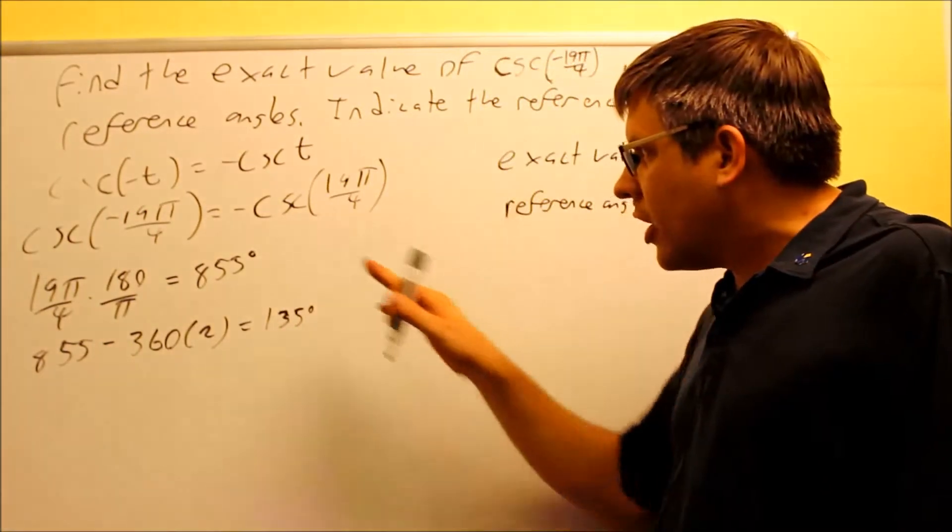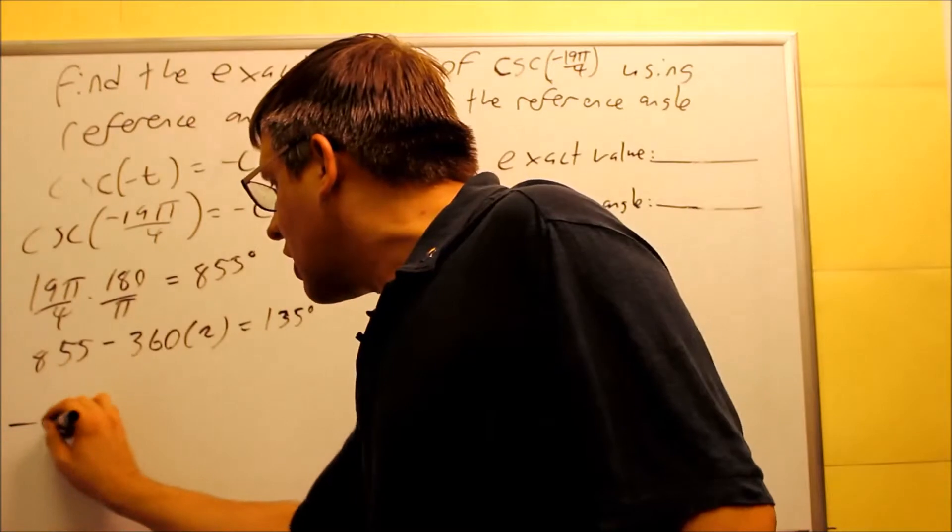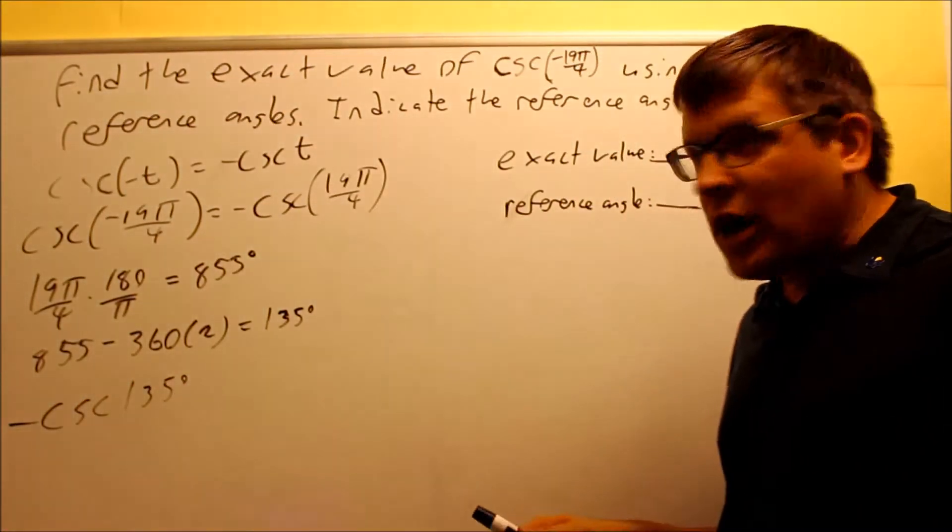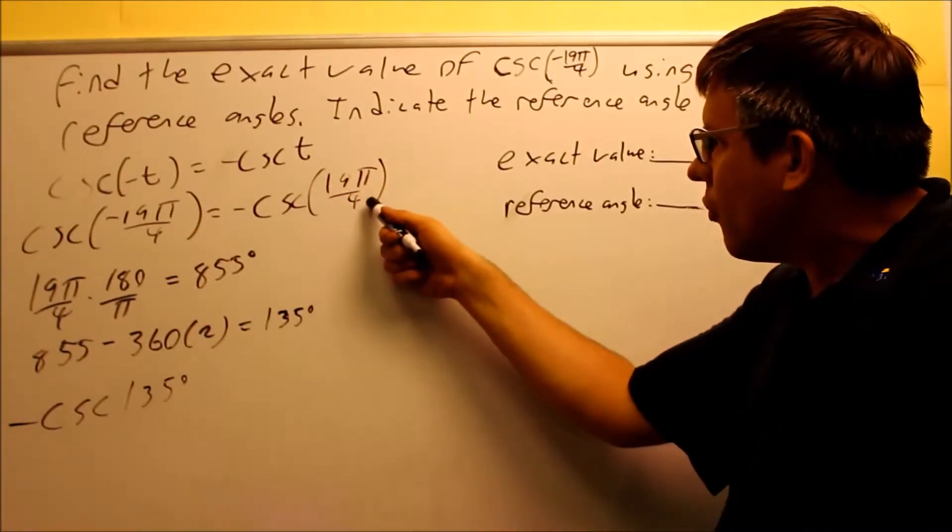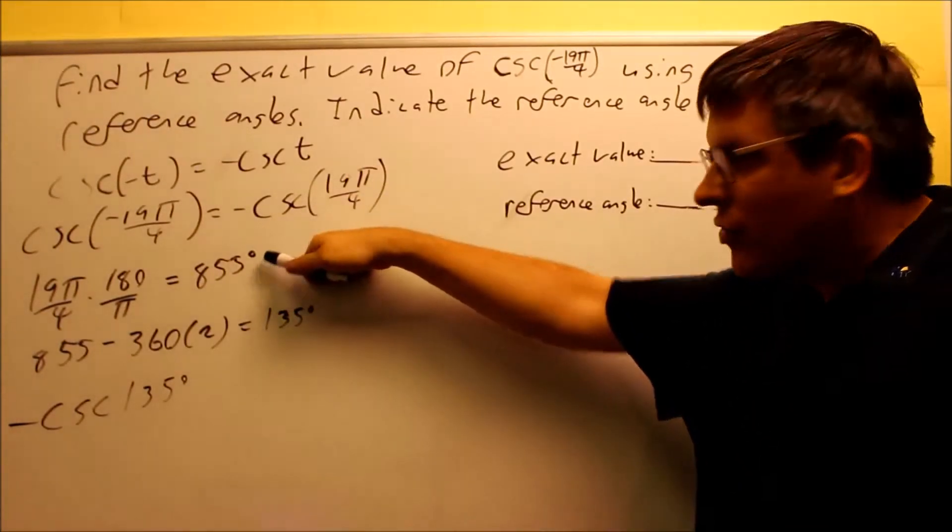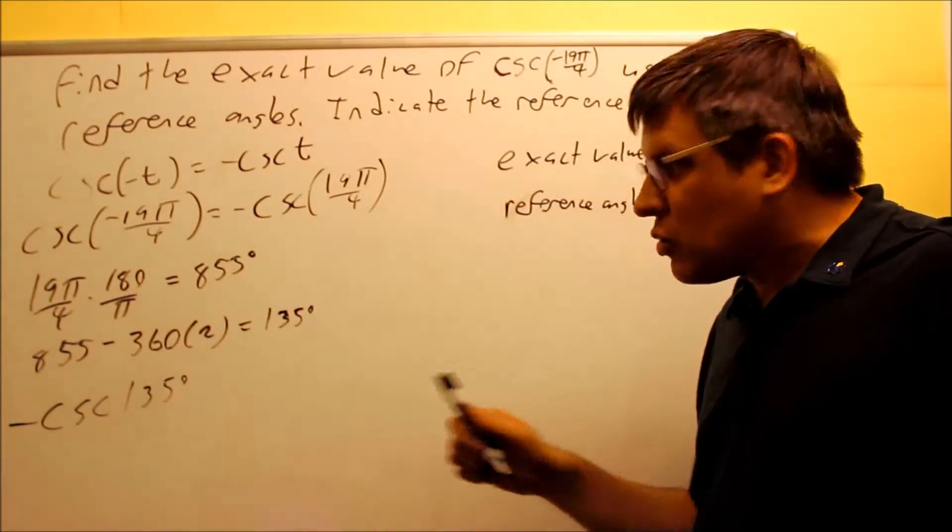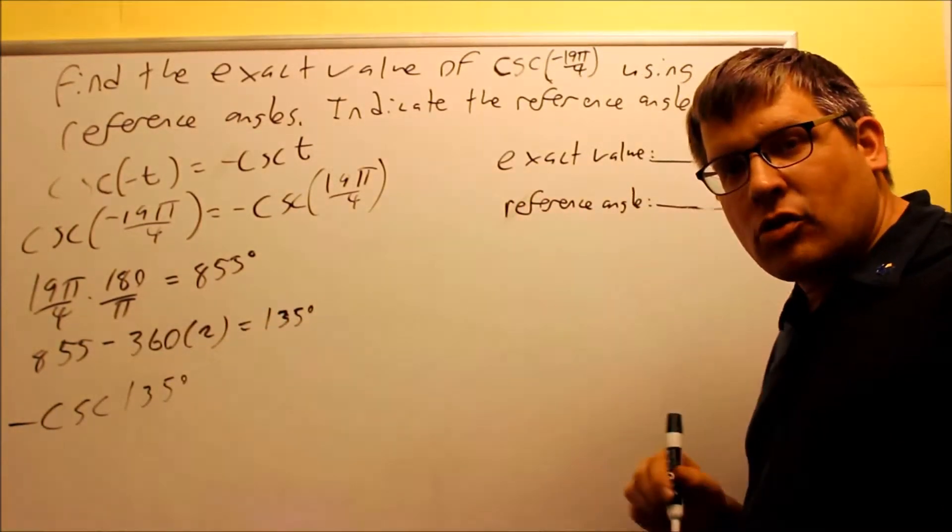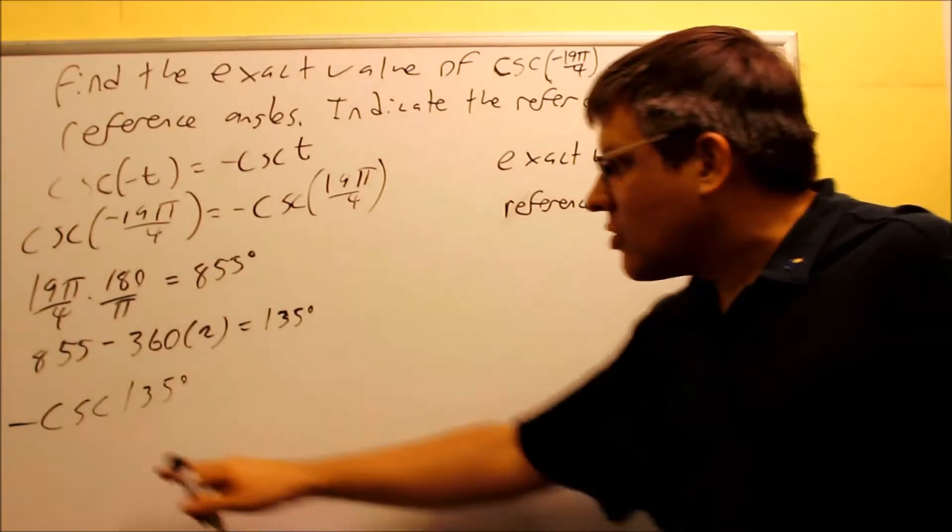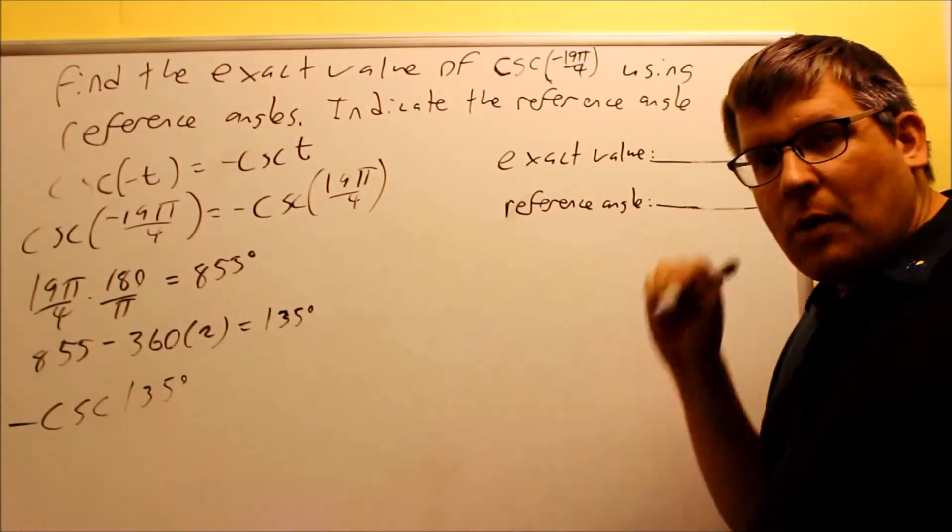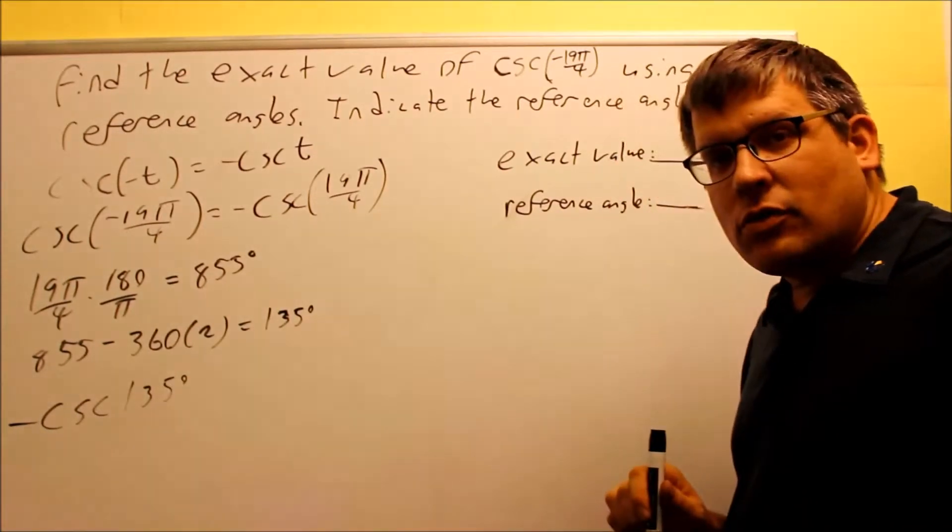what I'll be left with is 135 degrees. So my whole entire problem is going to get changed into this: negative cosecant 135. I've changed the 19π over 4 into 855. I know it's more than 360, so I subtract out the extra revolutions, which will take me back to my original starting angle, which would be 135. So now this is the problem I'm going to work out.